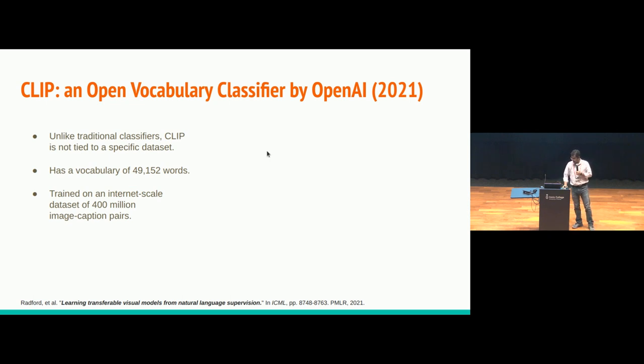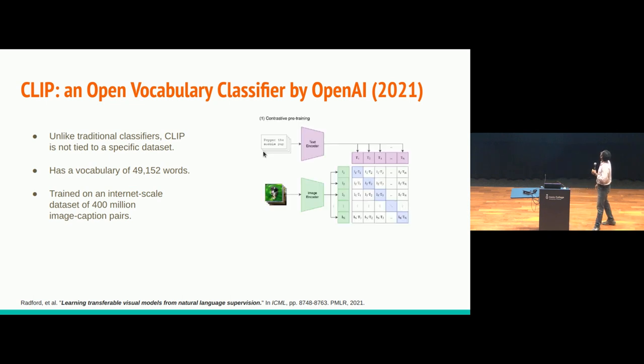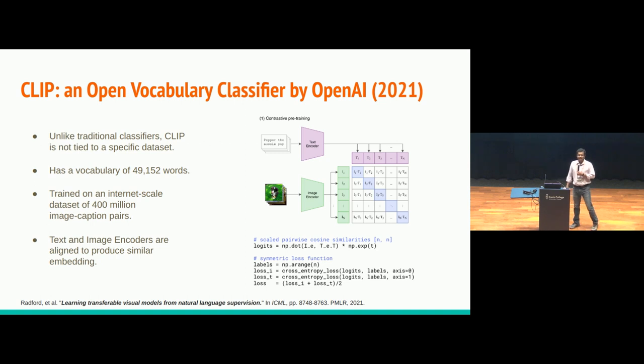Essentially, it has two encoders. One is text encoder, and another is image encoder, and it is trained on image and caption pairs. The caption describes the image, and the loss is designed in a way that these two encoders are aligned, meaning if the text describes the image correctly, then if I take the dot product between the encodings of the two, then the value will be high, otherwise the value will be low.